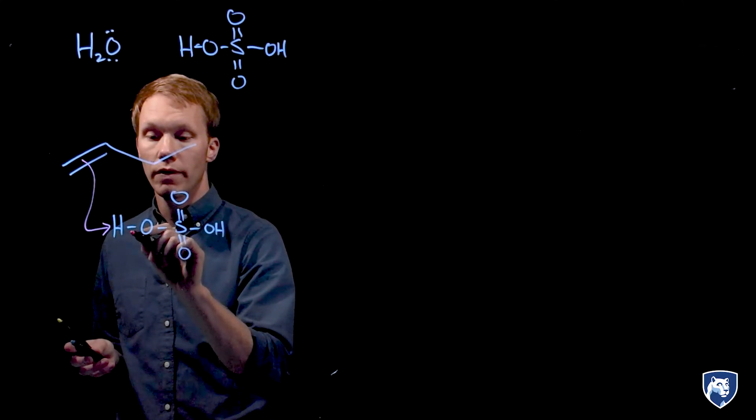This carbocation intermediate explains both the regio and stereochemical outcomes of this reaction. In terms of regioselectivity, we're forming a lower energy intermediate here, which leads us to our major product. This is in accordance with Markovnikov's rule. He observed that the hydrogen added to the less substituted side and the nucleophile added to the more substituted side. We now know that this is based solely on carbocation stability.